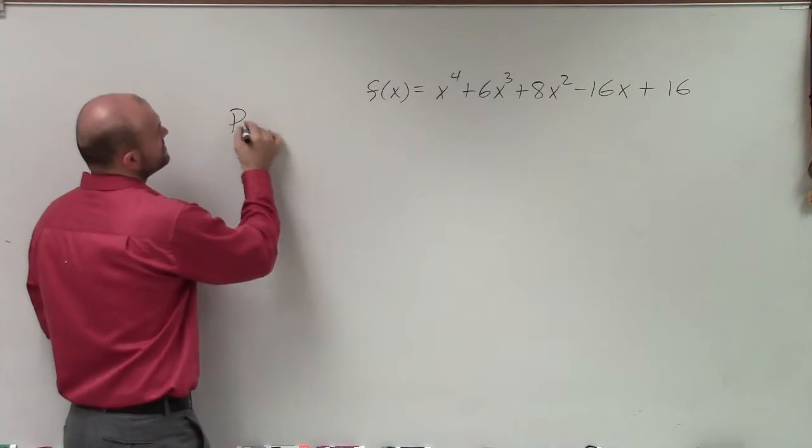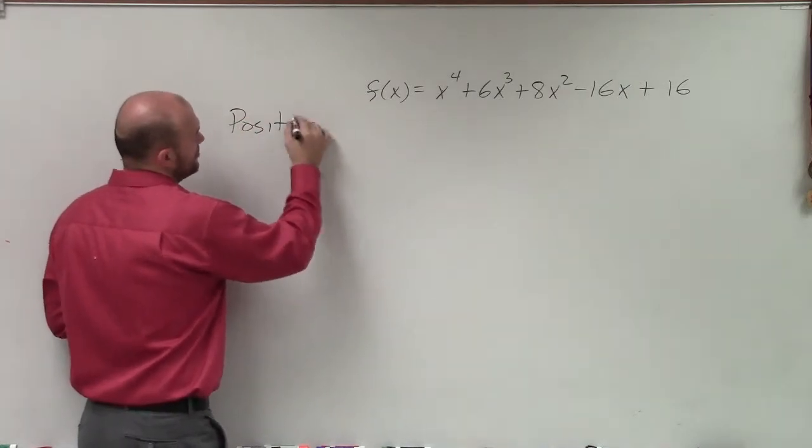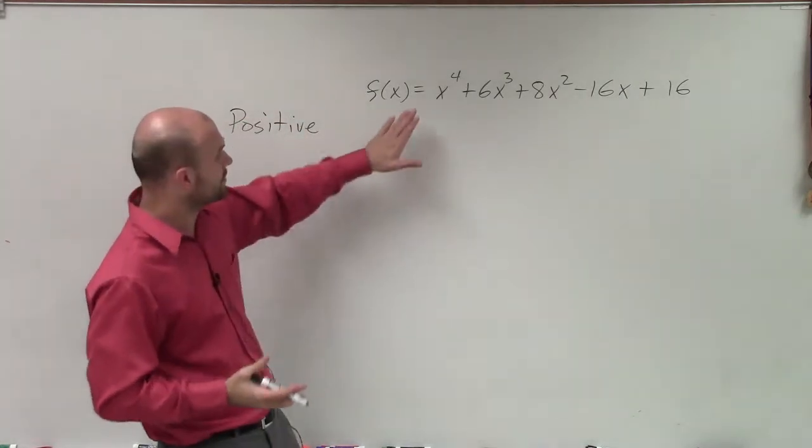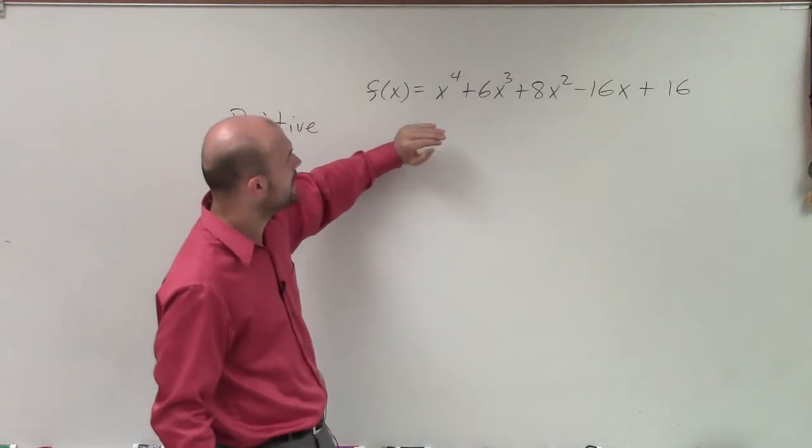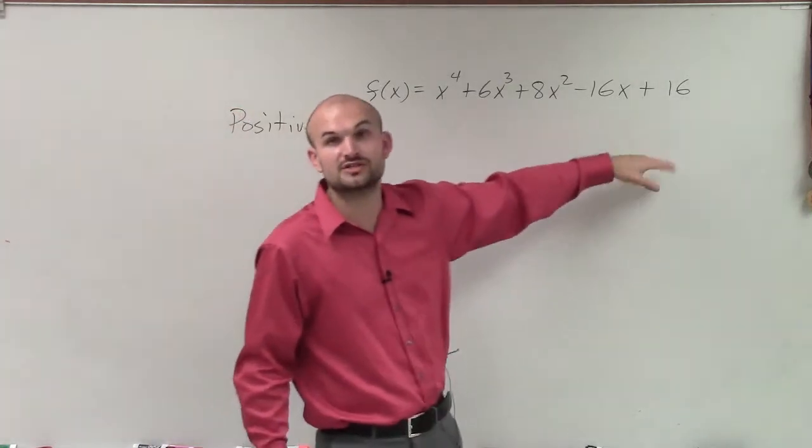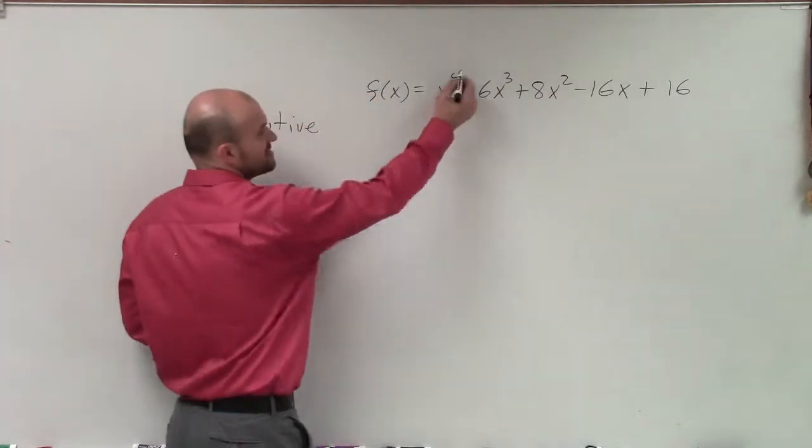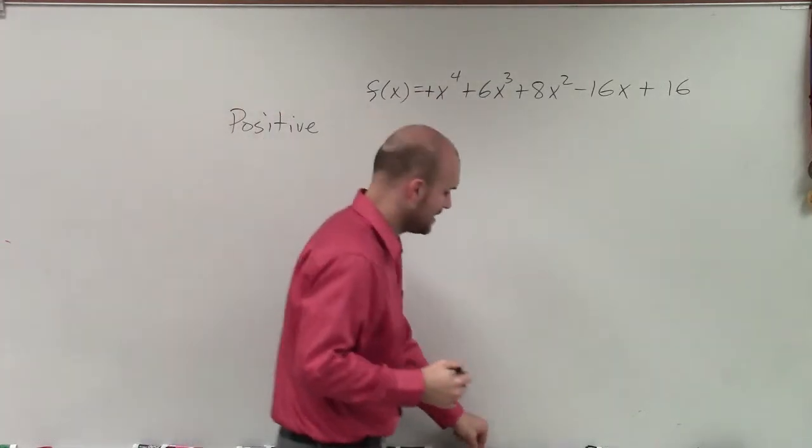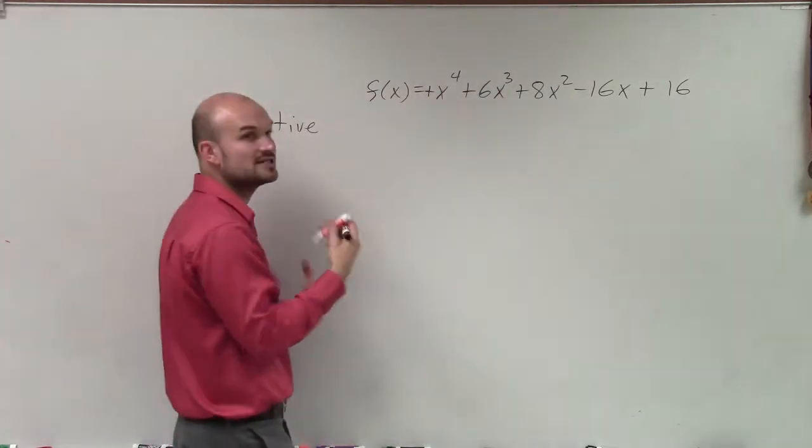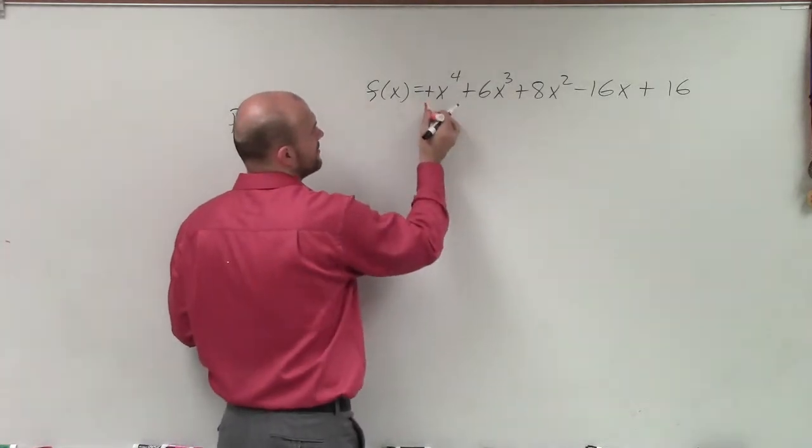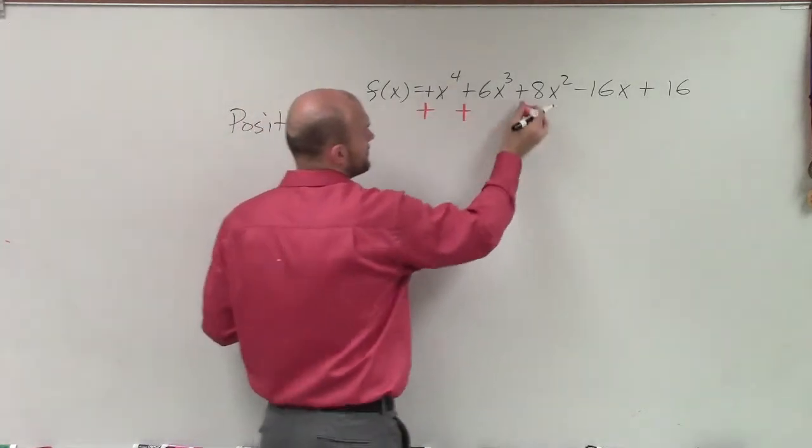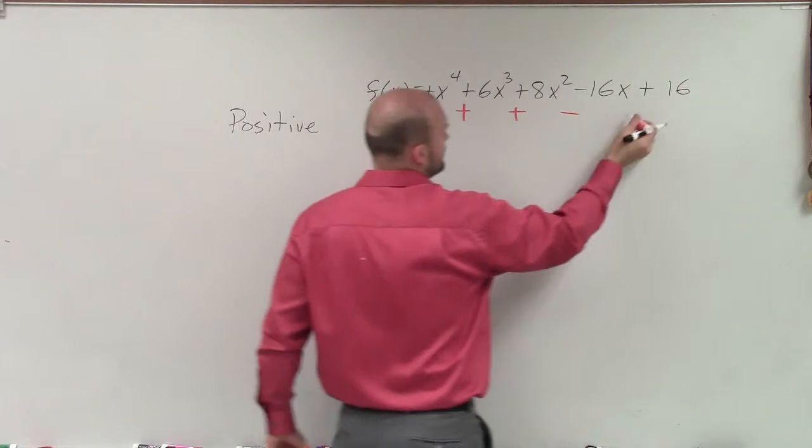The first thing that's easiest is to look at the possible positive zeros. We're going to look at the sign of the coefficients of each monomial. Since this is x^4, we know that's positive. What I like to do is bring down the signs so I can see how they alternate more clearly. I just take the sign of these coefficients.